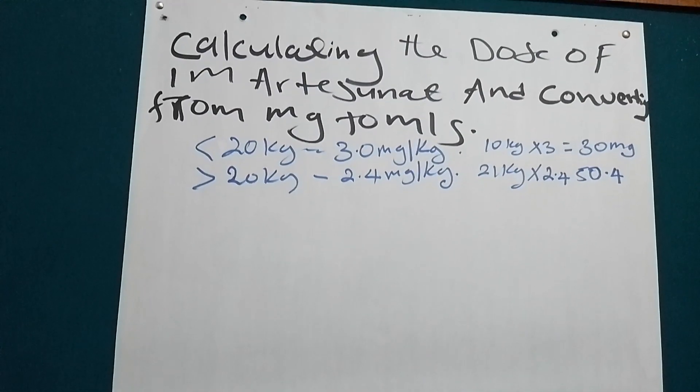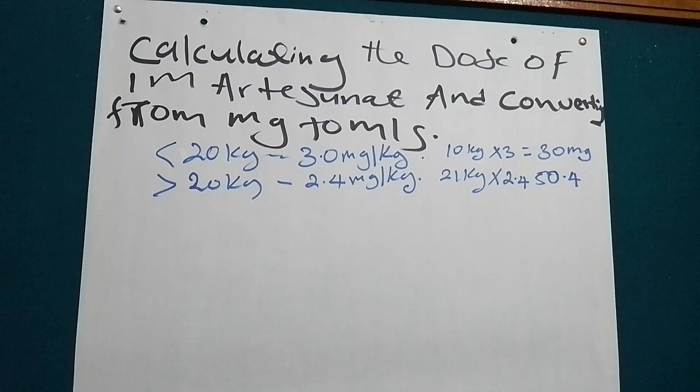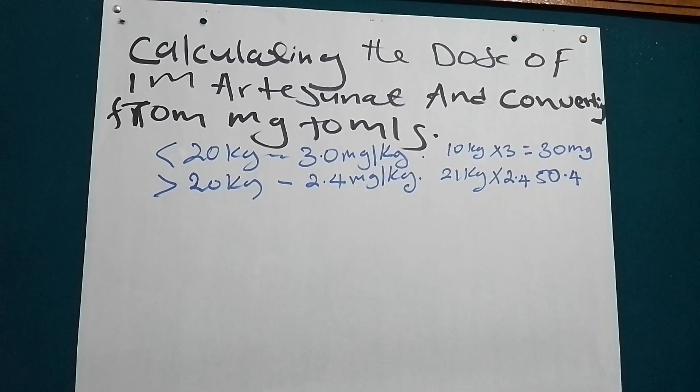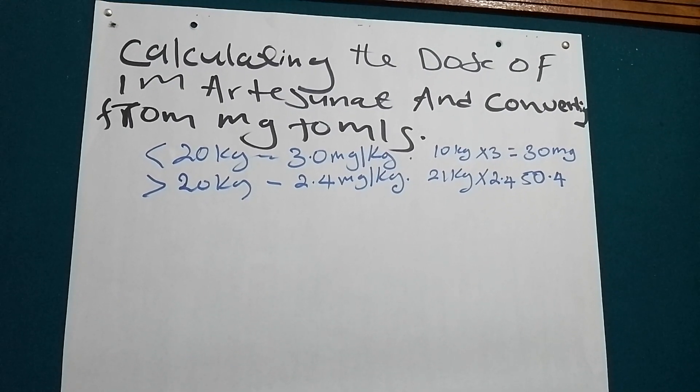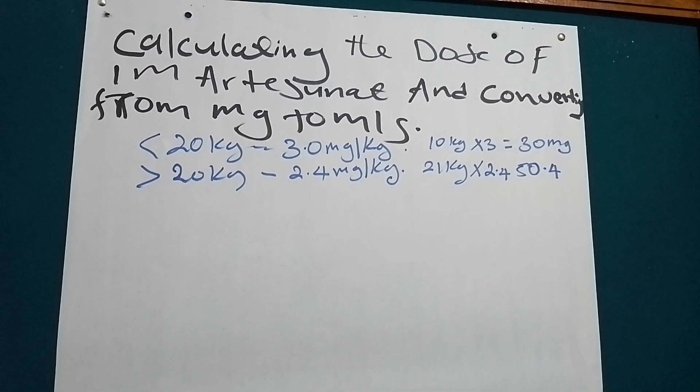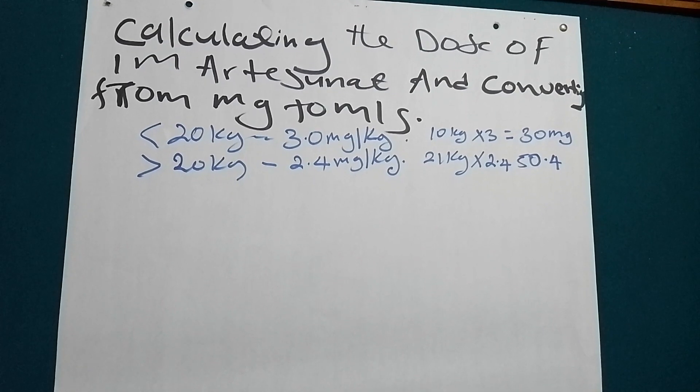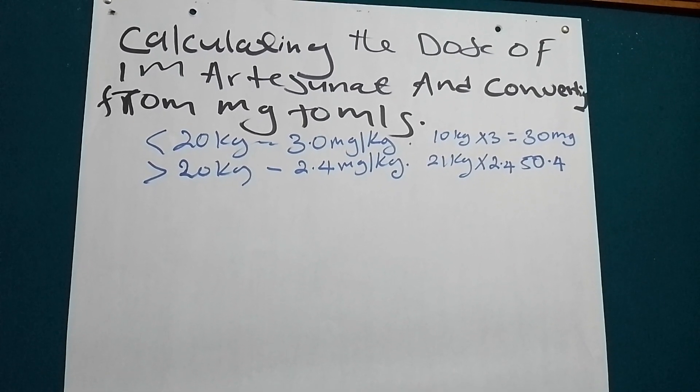In diluting IV artesunate, we use 1 ml of sodium bicarbonate and put it into the vial of artesunate, and then we add 5 ml of sodium chloride.